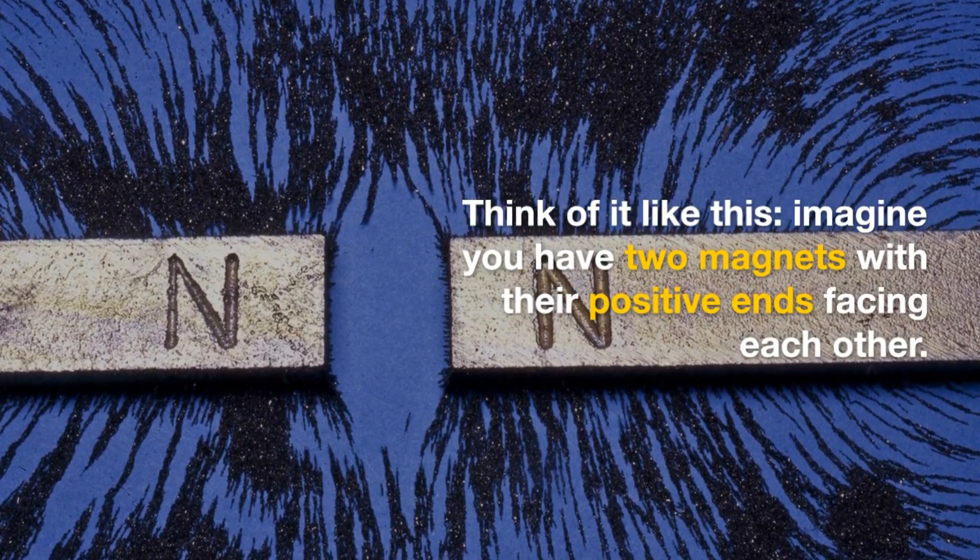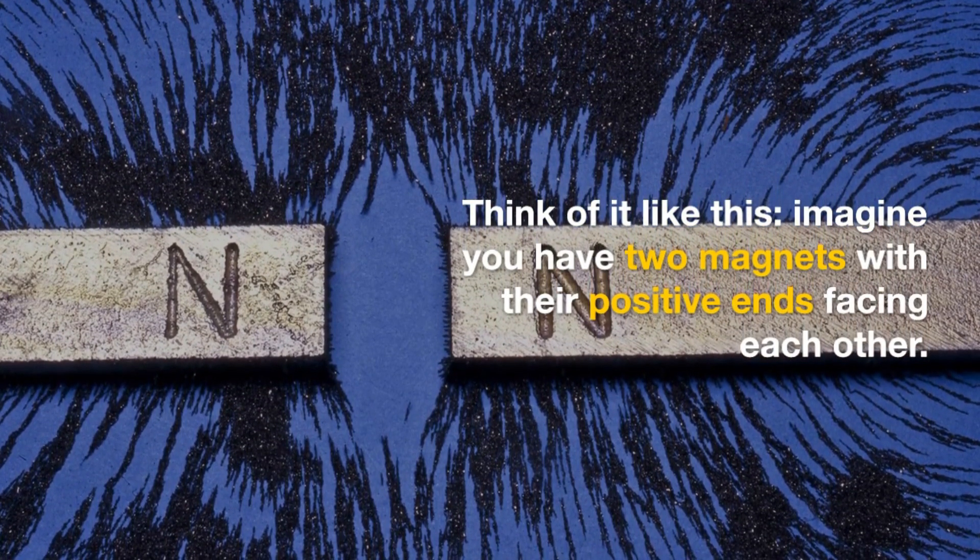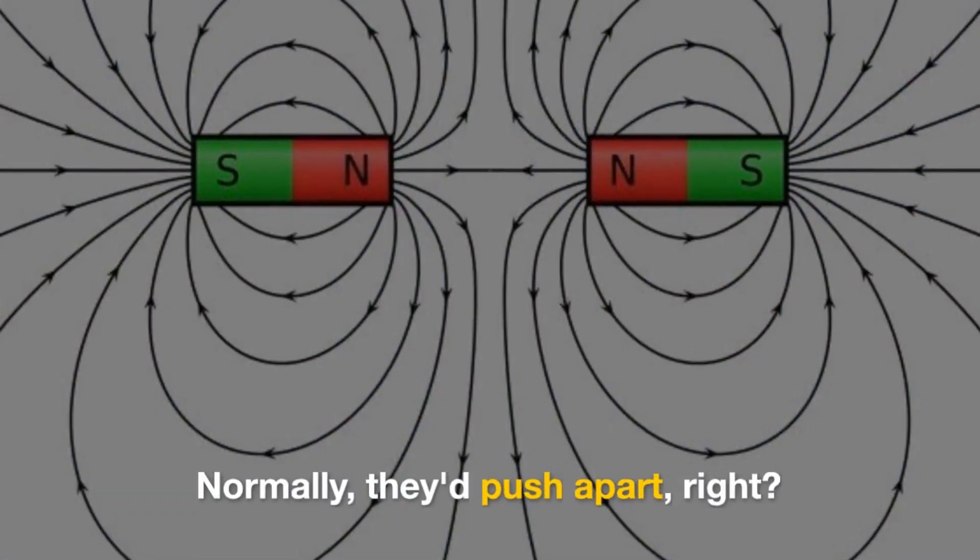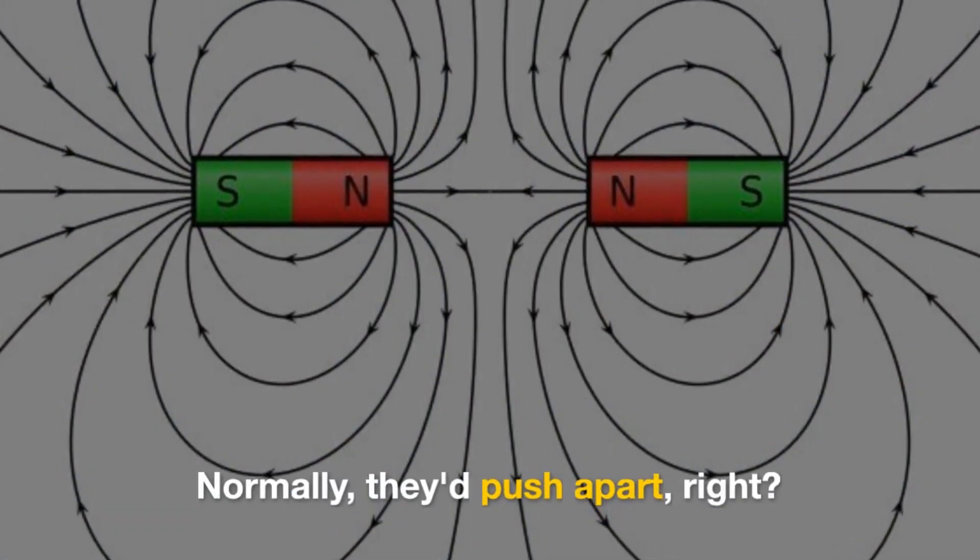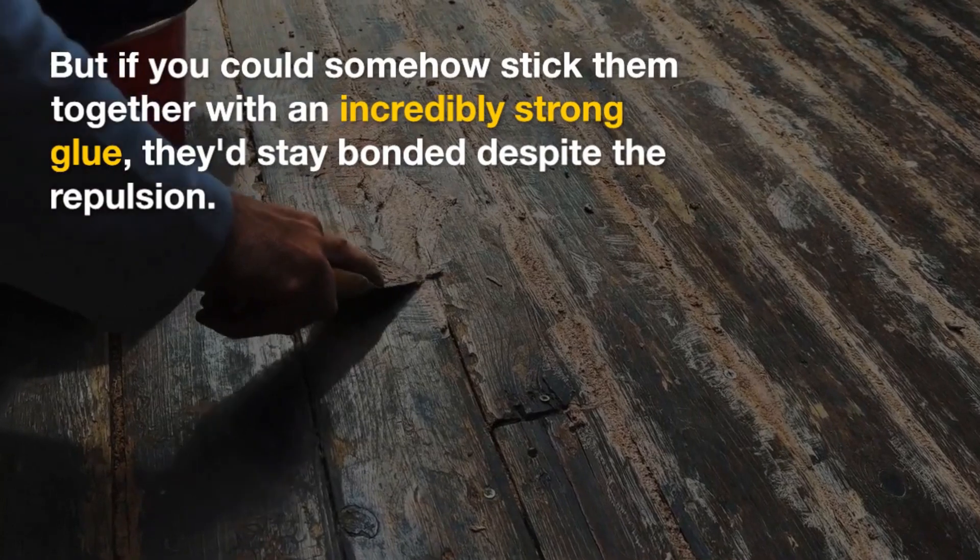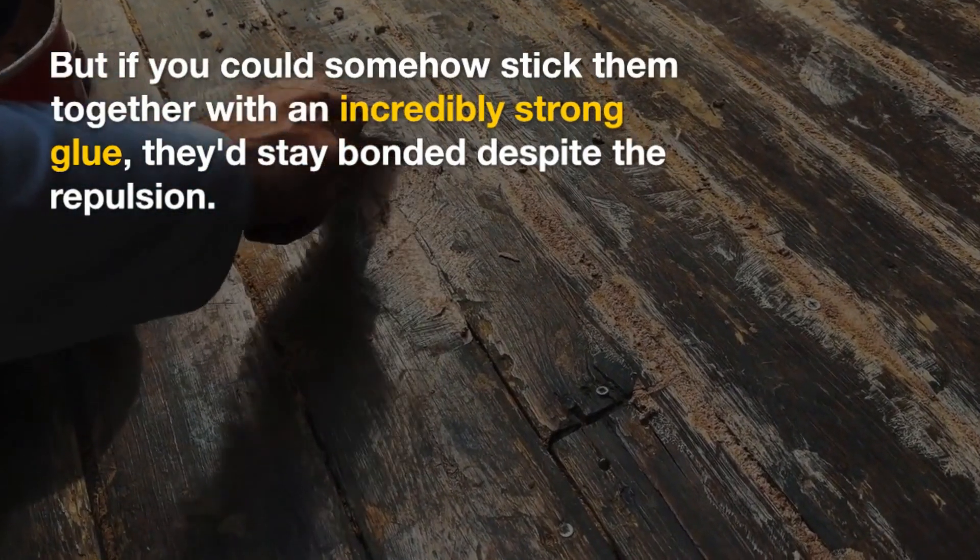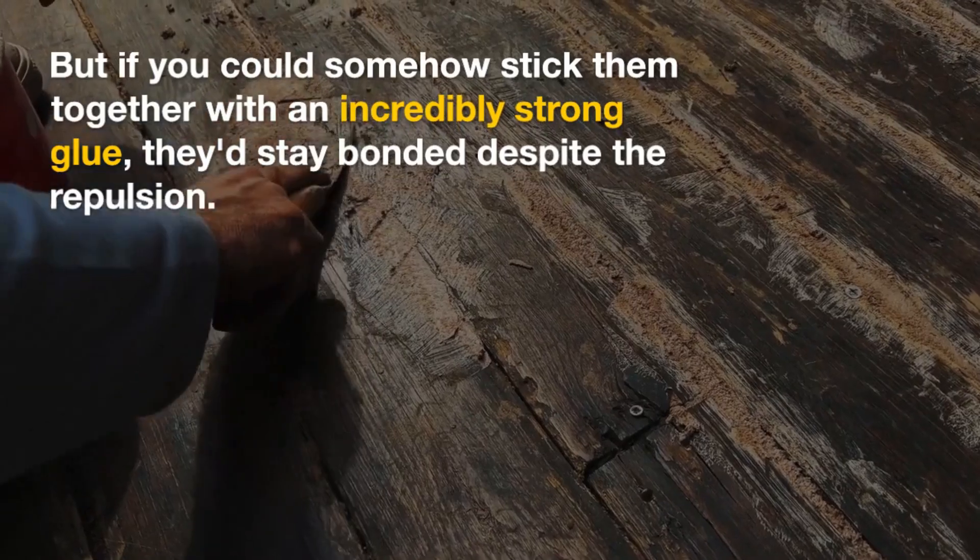Think of it like this. Imagine you have two magnets with their positive ends facing each other. Normally, they'd push apart, right? But if you could somehow stick them together with an incredibly strong glue, they'd stay bonded despite the repulsion.